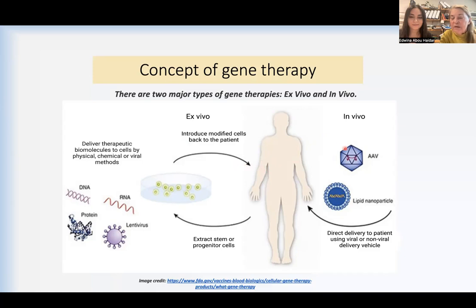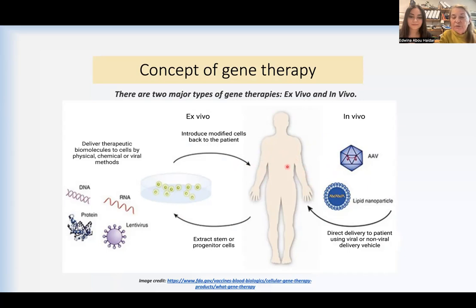The other way is called in vivo. In that case, you use viral vectors, with adeno-associated virus vector being the most common one used. You put your gene inside this capsid, or you can put your gene inside lipid nanoparticles. Those are injected either into the bloodstream or into a particular part of the body, and they will deliver the gene to a subset of cells in the body so they restore normal function.